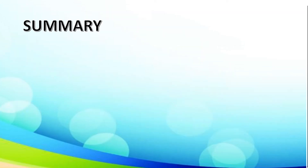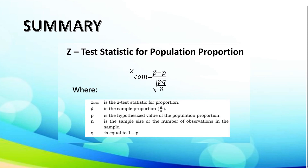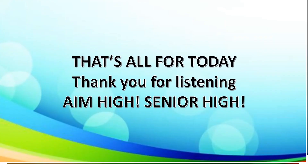For our summary, we are going to remember the formula for computing the population proportion or the z-test statistic, which is Z-sub-com is equal to P-hat minus P, all over the square root of PQ all over N. That's all for today, class. Thank you for listening. And always remember: aim high, senior high!